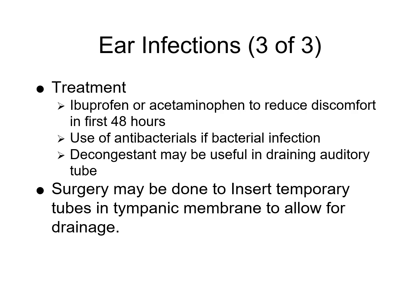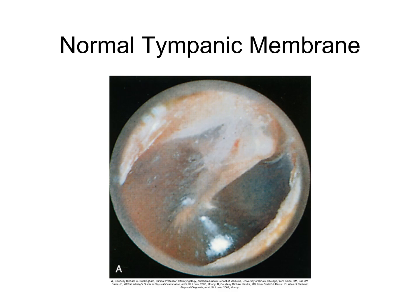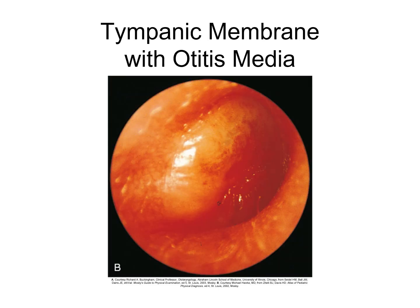Treatment for otitis media includes ibuprofen for pain within the first 24 to 48 hours. Antibiotics are given only if there is an actual infection — some physicians now reserve antibiotics for confirmed cases. A decongestant may be used, and if infections are recurrent, surgery to place tubes in the ear may be performed, mostly for children. A normal tympanic membrane appears pink and pearly gray, whereas an infected one appears red and bulging.